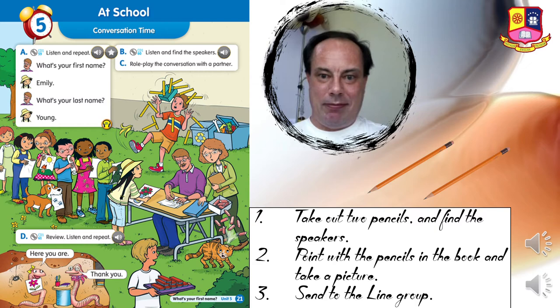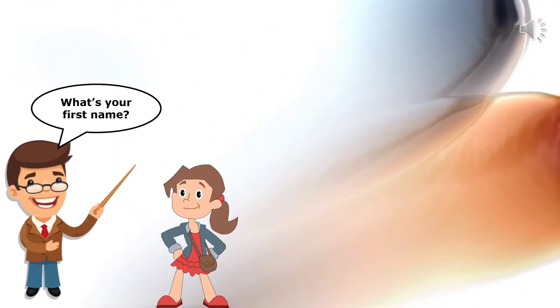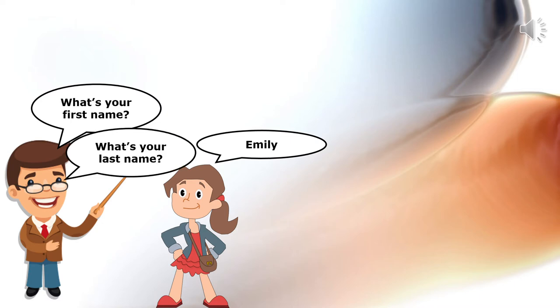B — listen and repeat. What's your first name? Emily. What's your last name? Young.